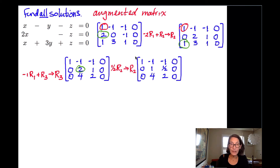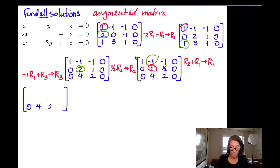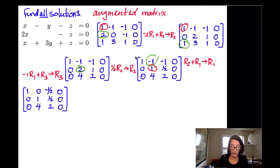Now I can use that 1 to knock out the entries above and below it. I'll knock out the negative 1 above it by adding row 2 to row 1: row 2 plus row 1 becomes my new row 1. Row 2 and row 3 don't change. The first row becomes 1, 0, negative one half, 0.